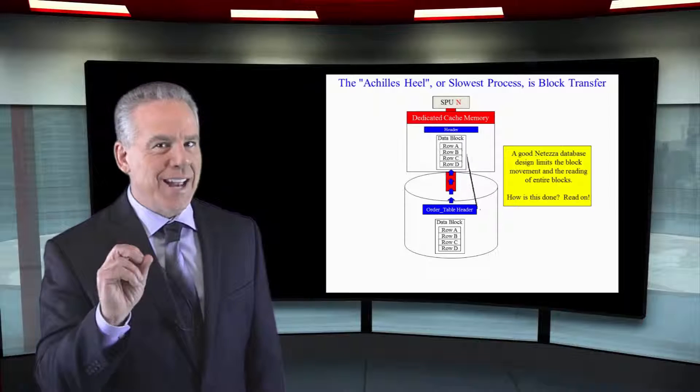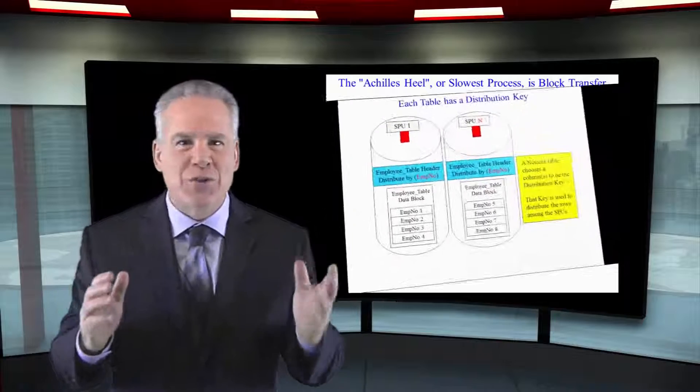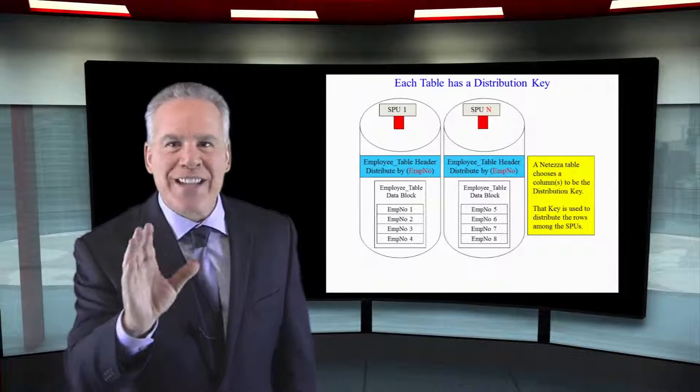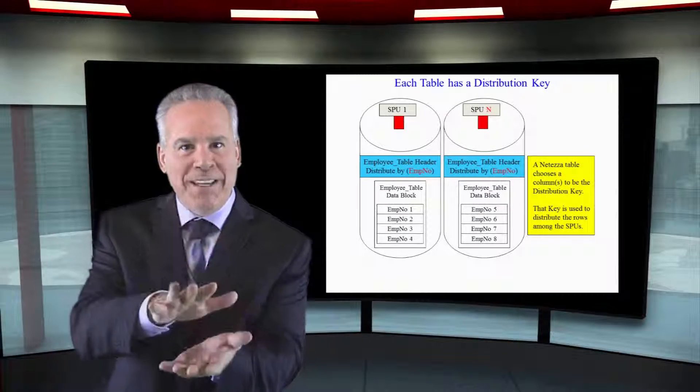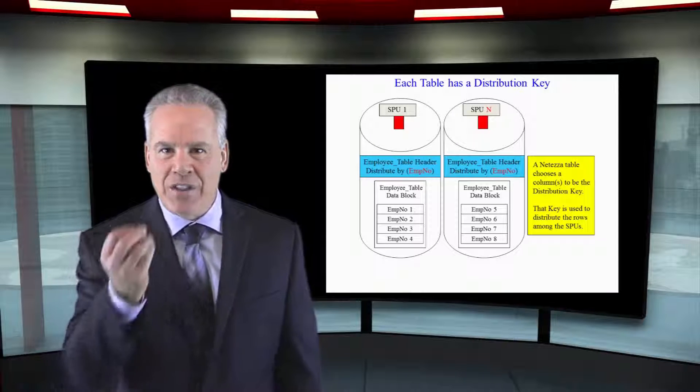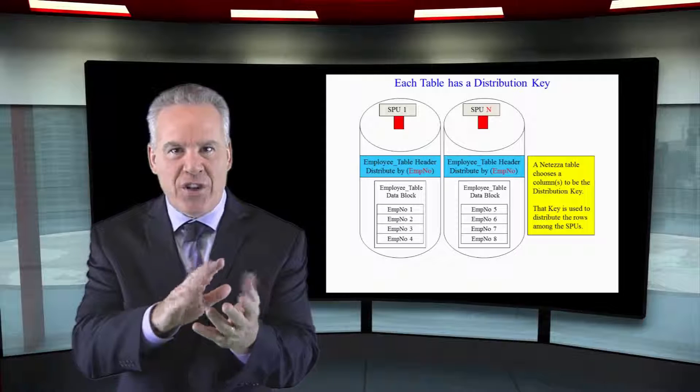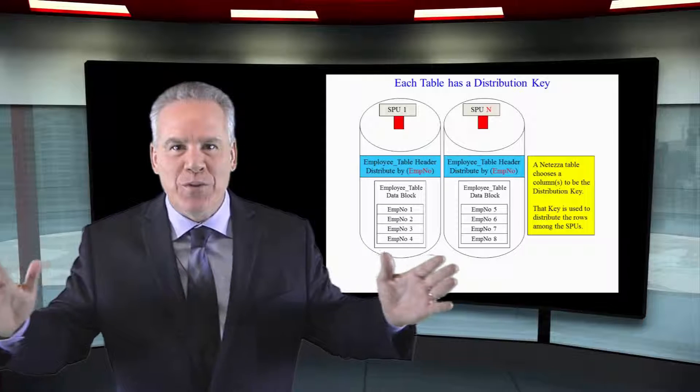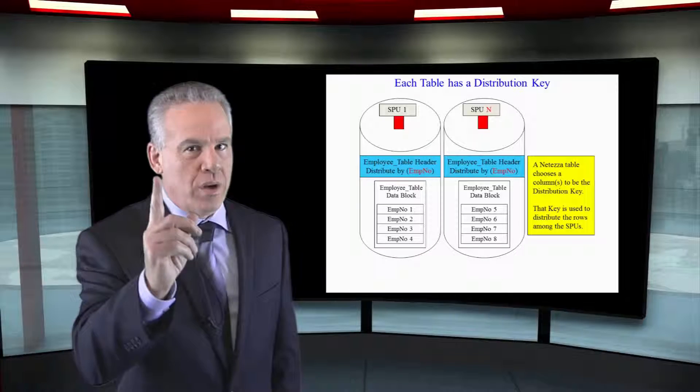When you create your Netezza table, you've got to give it a distribution key. That's the real big decision that you're going to have to make. And once you do that, you're all set. Now, the distribution key will be hashed, and that's what's going to distribute the data. It's going to be important in joins.